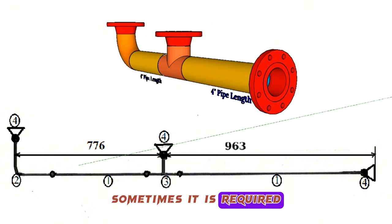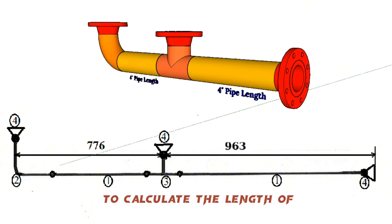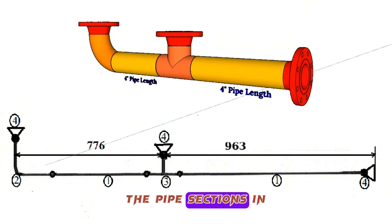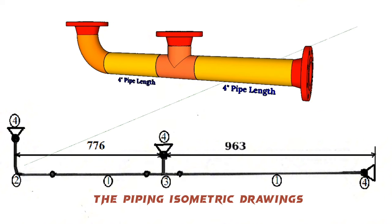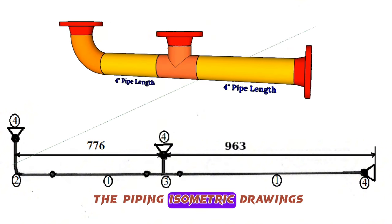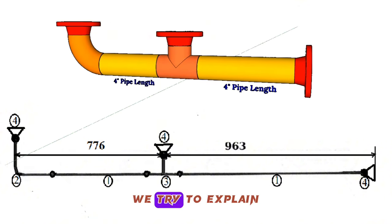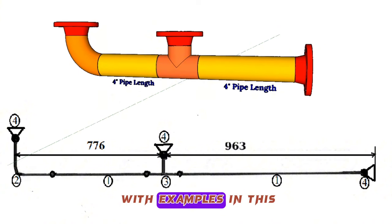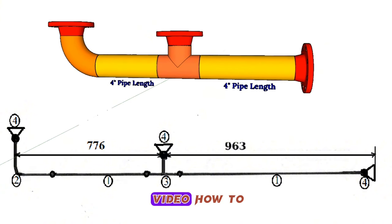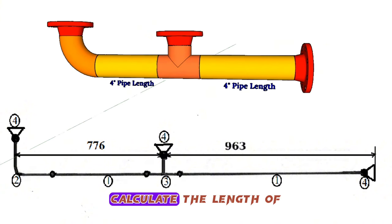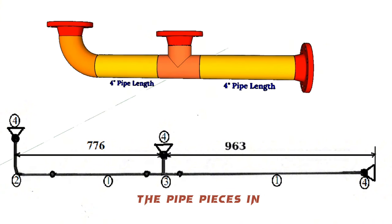Sometimes it is required to calculate the length of the pipe sections in the piping isometric drawings. We will explain with examples in this video how to calculate the length of the pipe pieces in the pipeline.